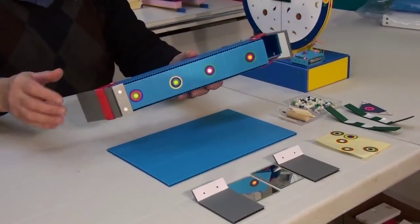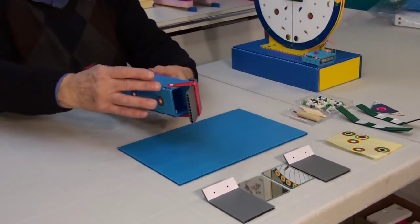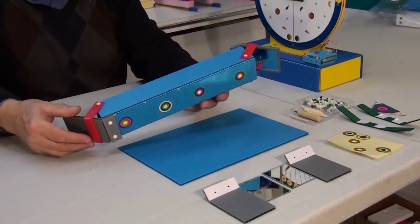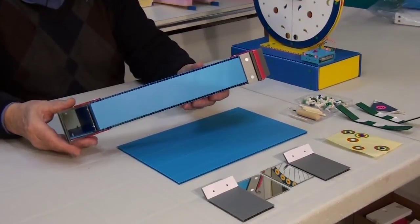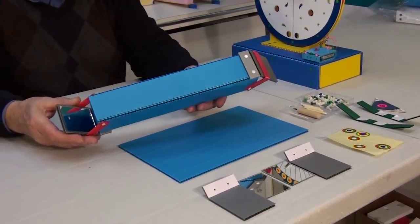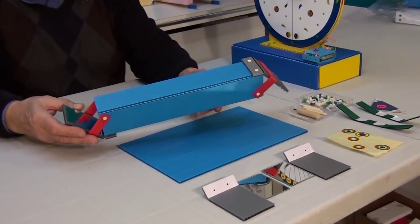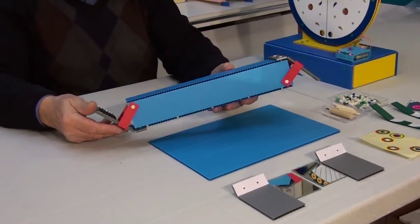It consists of a tube and two mirrors which are attached to the opposite sides of the tube at a 45 degree angle. The periscope's function is based on the law of reflection. This law states that the angle of reflection is equal to the angle of incidence.